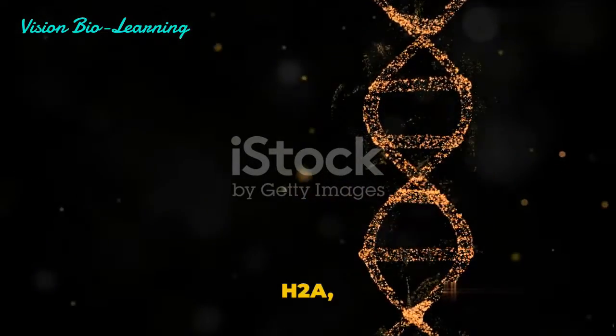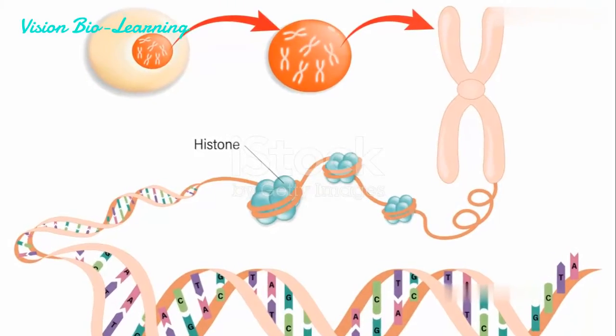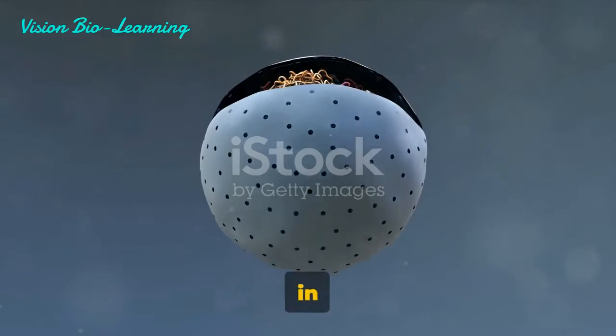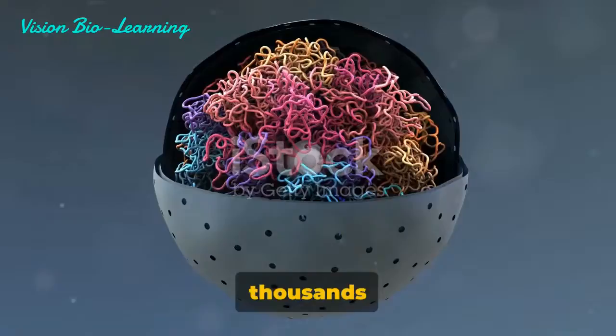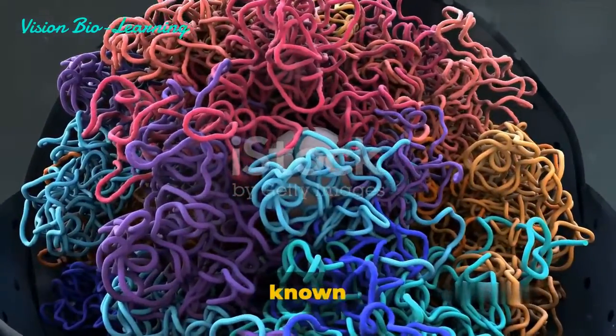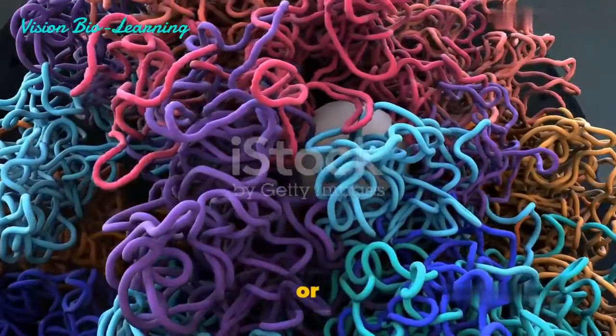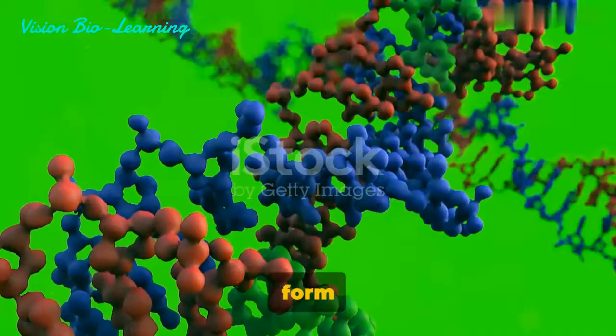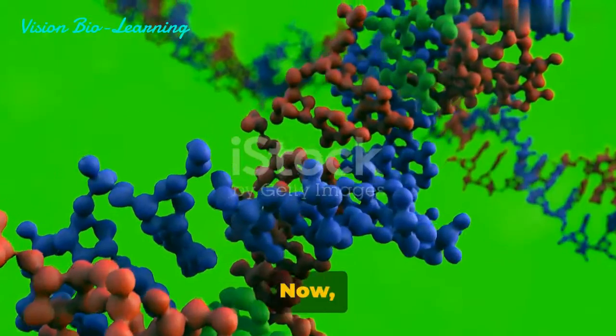And there are five main types of histones: H1, H2A, H2B, H3, and H4. But it's not just histones in there. There are also many thousands of other proteins found in far less abundance, collectively known as non-histone proteins or NHPs. Together, these proteins, along with the DNA, form a complex called chromatin.